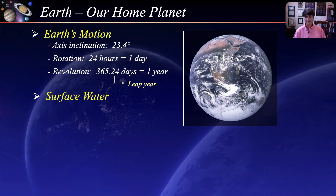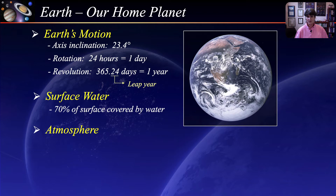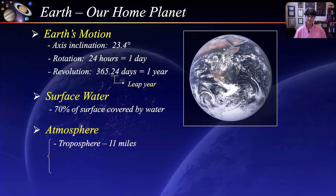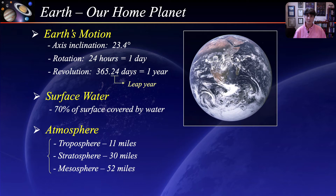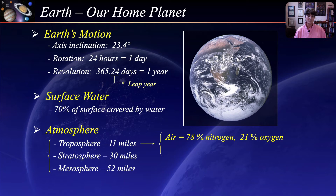Earth is unique among all the other planets in that it has abundant surface water — 70% of the Earth's surface is covered by water. Earth's atmosphere is a thin layer of gas that surrounds the Earth and plays an important part in protecting and sustaining life, stretching about 50 to 60 miles above the surface. It is divided into three basic regions: the troposphere out to about 11 miles, the stratosphere out to about 30 miles, and the mesosphere out to about 52 miles. We live in the troposphere, where the air is 78% nitrogen and 21% oxygen, with the remaining 1% argon and carbon dioxide, and most of our weather occurs.